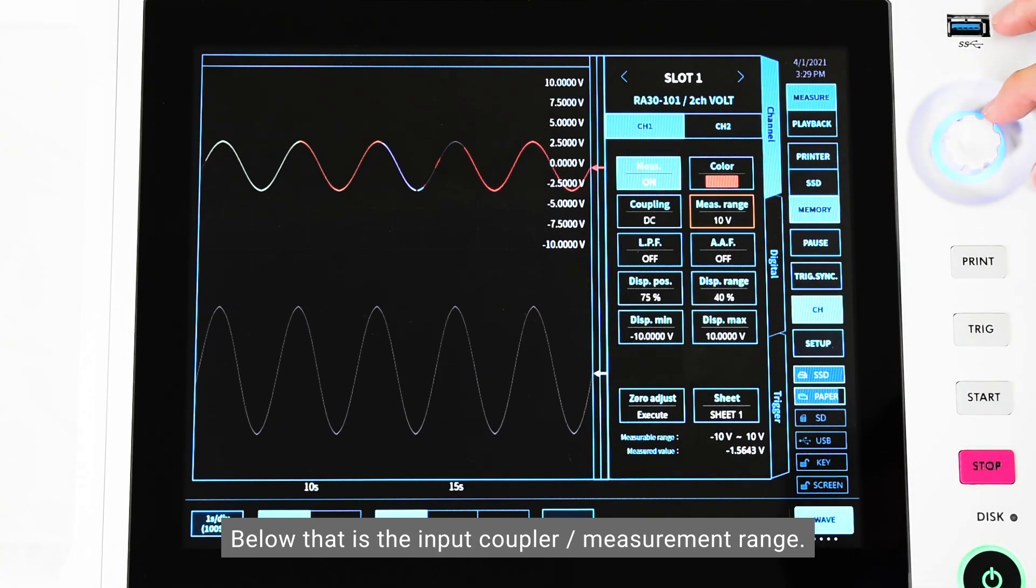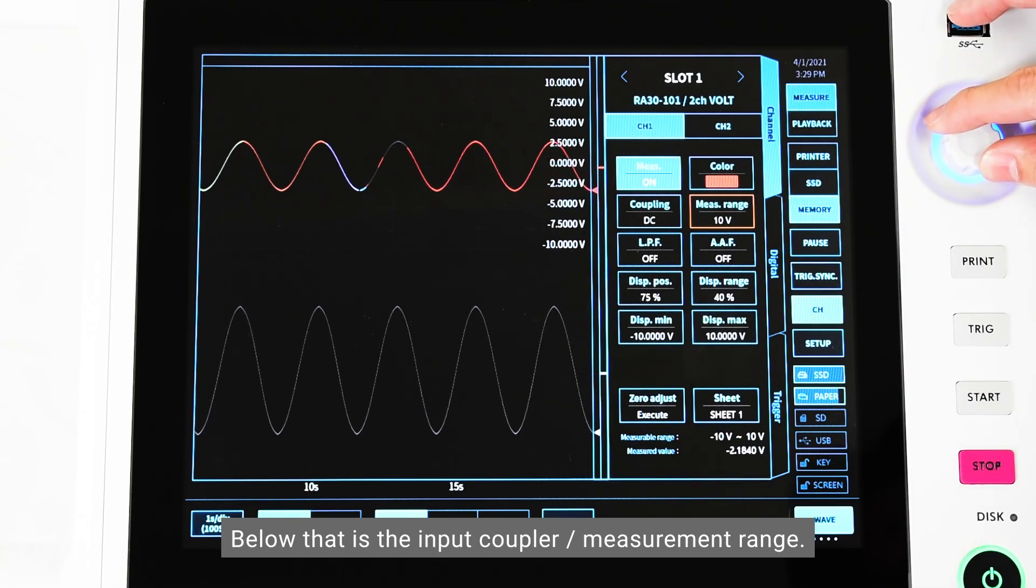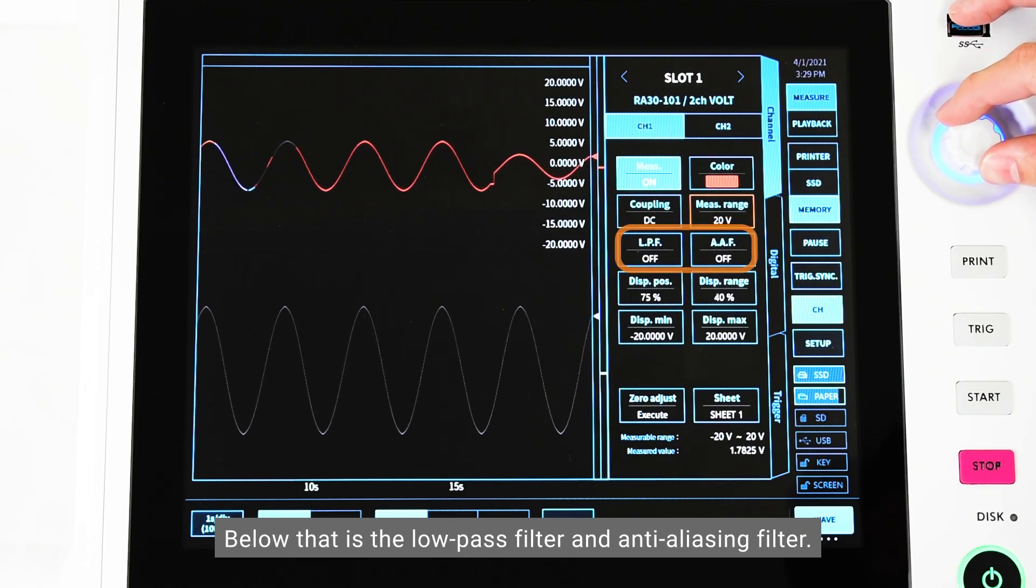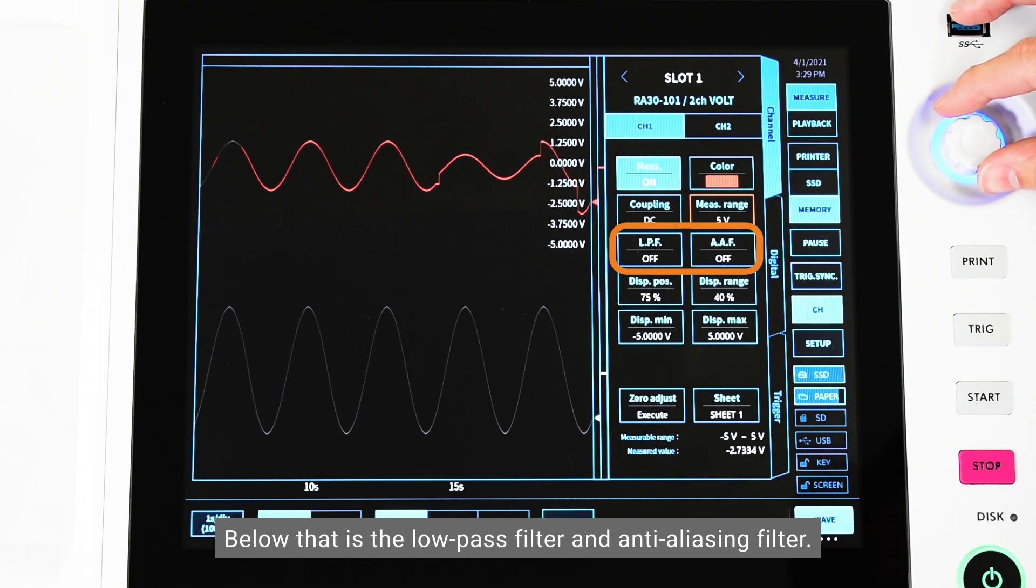Below that is the input coupler and measurement range. The range can be changed with the jog dial like this. Below that is the low-pass filter and anti-aliasing filter.